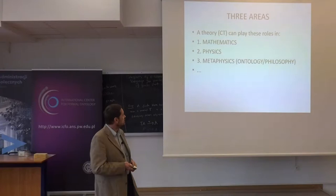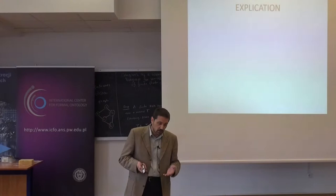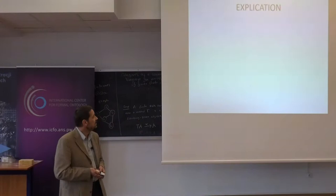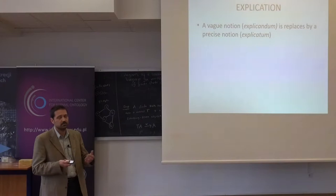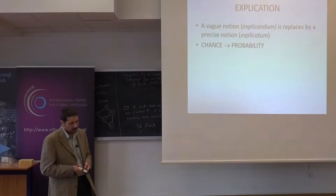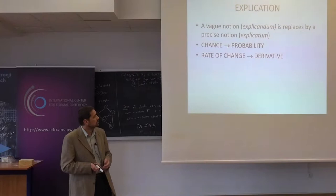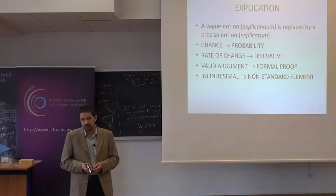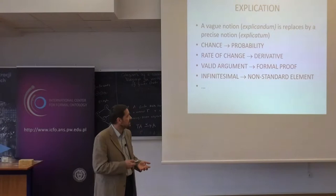I will concentrate on these three. First, just a few words about explicating concepts with the use of mathematical concepts and tools and theories. This is a general procedure of conceptual recasting, redefining, or representing — replacing a vague notion with a more precise one; it's not always formally defined. Examples are abundant: the classical example of explicating the notion of chance as probability, the rate of change as a derivative, a valid argument as a formal proof, or an infinitesimal as a non-standard element, and so on. This is a moment when we try to replace notions by different, more precise notions.